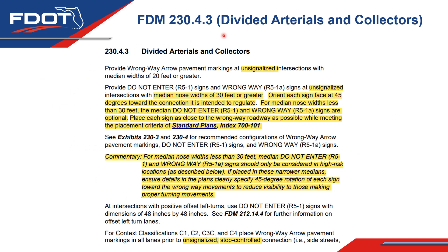Now we're going on to divided arterials and collectors. There were a few changes associated with this criteria. Last year we implemented wrong way driving on arterials and collectors for the signs and the pavement markings. One thing we found is that when these signs were placed along the roadway into the median, some right-way drivers were getting confused thinking they were going the wrong way because they thought the median sign was intended for them. After further discussions with the DTOEs and the wrong way driving task team, it was decided to revert back to signs being in the median when the MUTCD requires it — when the median nose widths are 30 feet or greater.